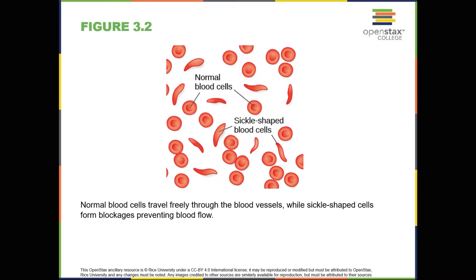While all humans share certain biological mechanisms, we are each unique. And while our bodies have many of the same parts — brains and hormones and cells with genetic codes — these are expressed in a wide variety of behaviors, thoughts, and reactions. Why do two people infected with the same disease have different outcomes, one surviving and one succumbing to the ailment? How are genetic diseases passed through family lines? Are there genetic components to psychological disorders, such as depression or schizophrenia? To what extent might there be a psychological basis to health conditions, such as childhood obesity? To explore these questions, let's start by focusing on a specific disease: sickle cell anemia.